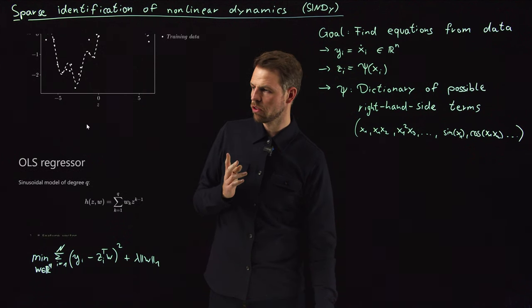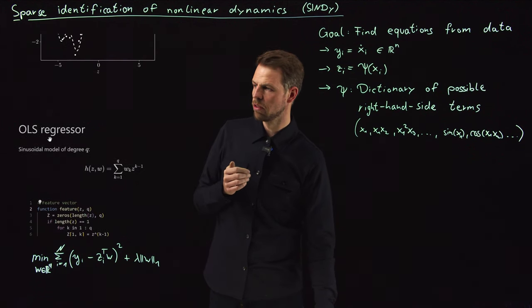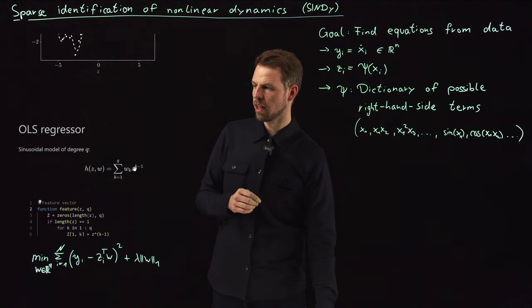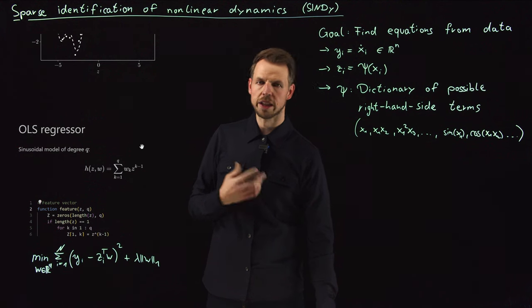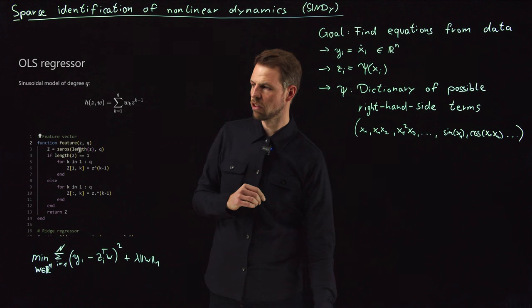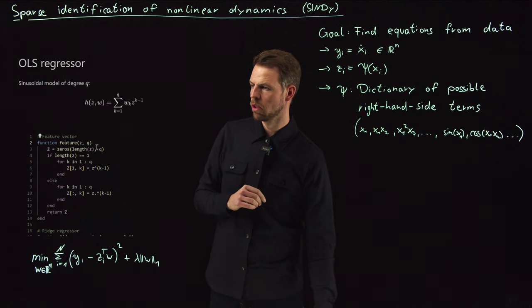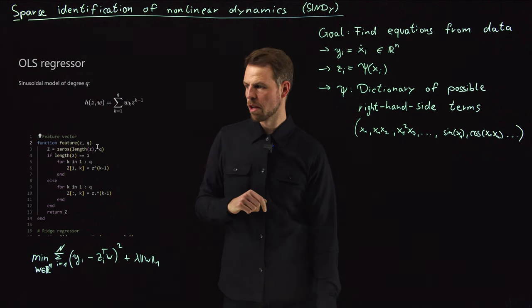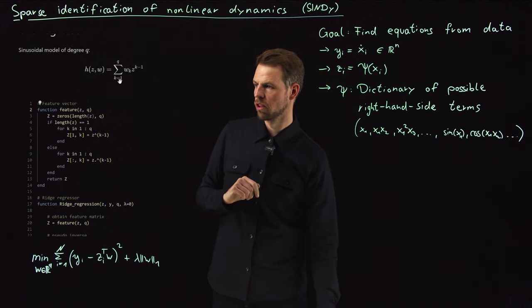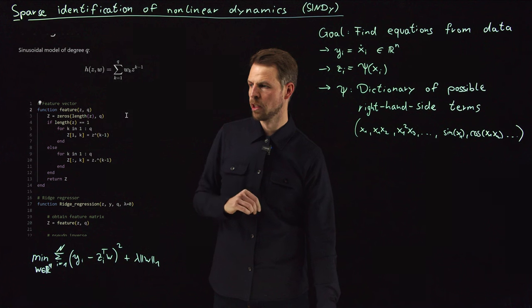We have seen this a lot of times, the OLS regressor is simply we select a model of Q terms which are just the weights times the input raised to the Kth power. And so this is what we get as a feature vector, Z raised to the Q minus 1th power at max. Because of the bias term we then have, so this should start at zero, so we get a zero term and then these terms.